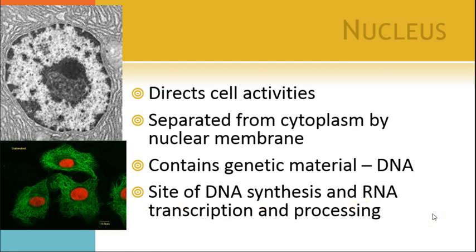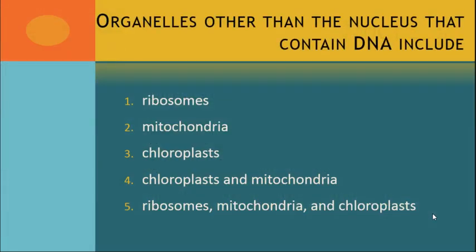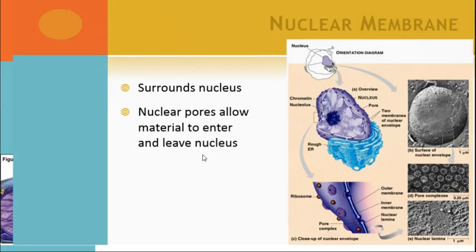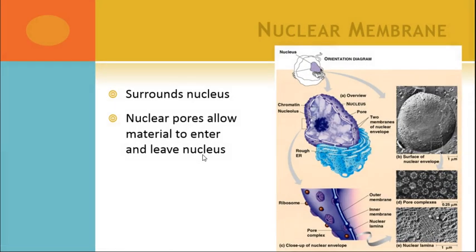Now, the nucleus is not the only organelle that has DNA. Ribosomes do not have DNA — they are made of RNA. But both mitochondria and chloroplasts have DNA, and we will talk about why in a later class. The nucleolus is actually inside the nucleus itself — it's just a region where you have some condensed DNA, and it's where all of the ribosomal RNA is transcribed. The ribosomal RNA, like the messenger RNA, will leave the nucleus through the nuclear pores. The nuclear membrane — that's the nuclear envelope — surrounds the nucleus.